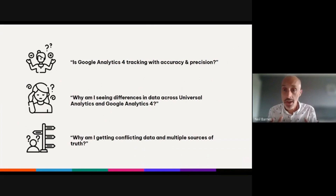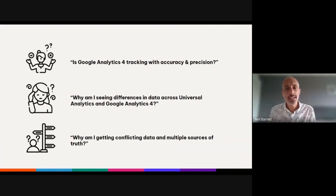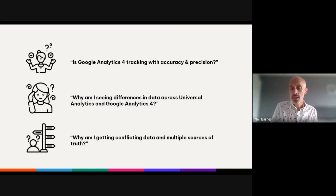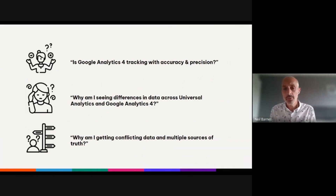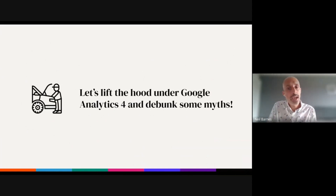So big changes, which has meant a lot of confusion and common questions like: Is Google Analytics tracking with high accuracy and precision? Why am I seeing differences in data when I compare Universal Analytics and Google Analytics 4? And why am I getting conflicting data and multiple sources of truth — for example, running data in the Google Analytics 4 interface and running seemingly the same data using the BigQuery raw data export, but getting two very different results? The purpose of my talk today is to lift the hood under Google Analytics 4, to debunk some myths and provide some clarity.